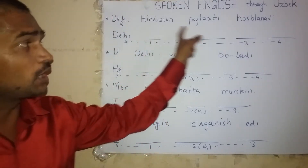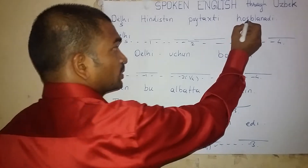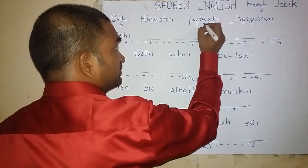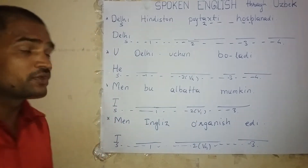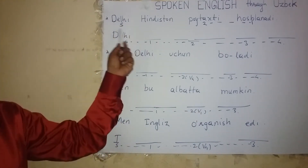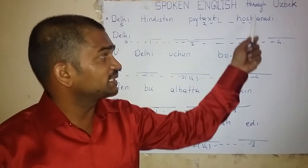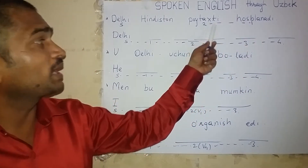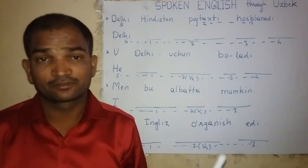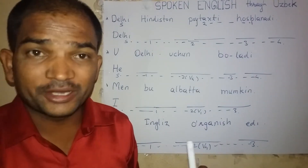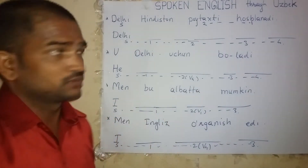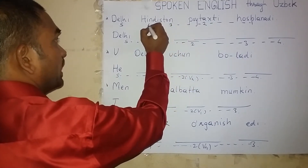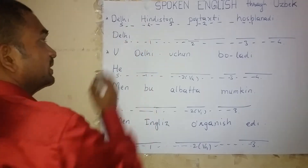After finding the subject, we should not look at any other word of the sentence. We should directly go to the end of the sentence, then come back. Subject is Dilli. At the end of the sentence is Husbandi. Before one, about two, is Poetaxi. The English word for Poetaxi is 'the capital of India.'